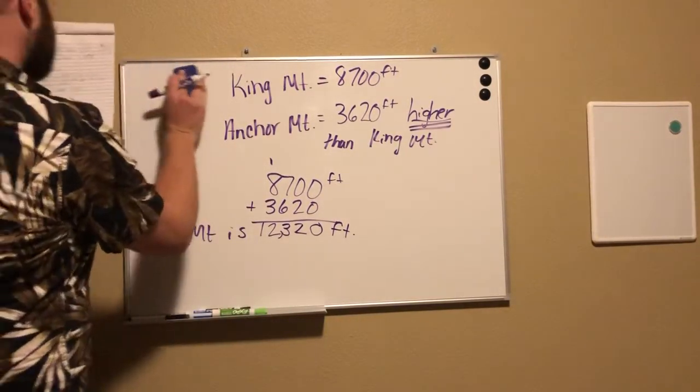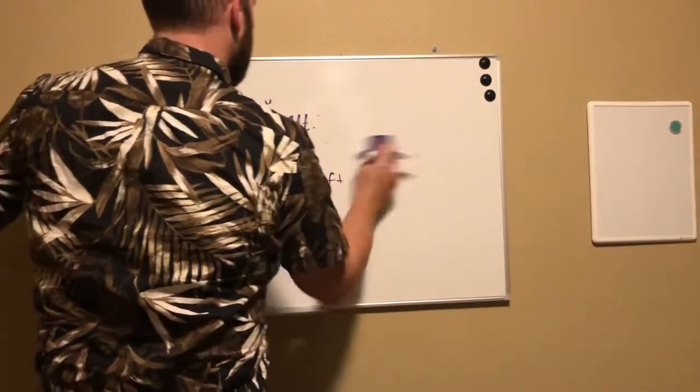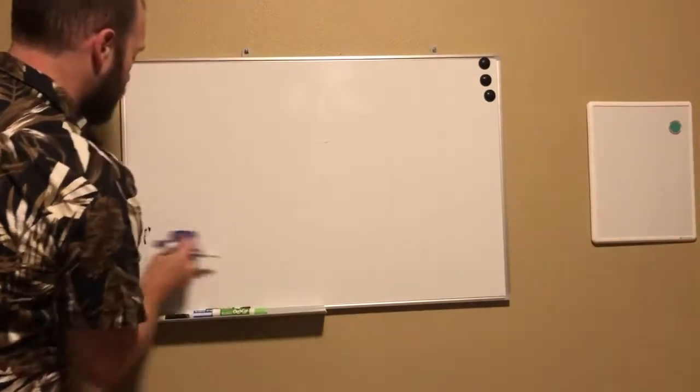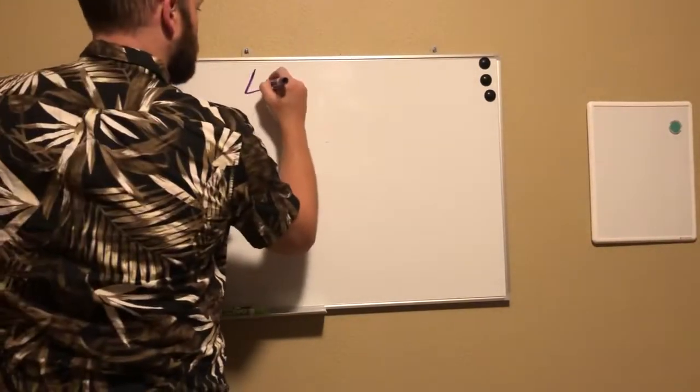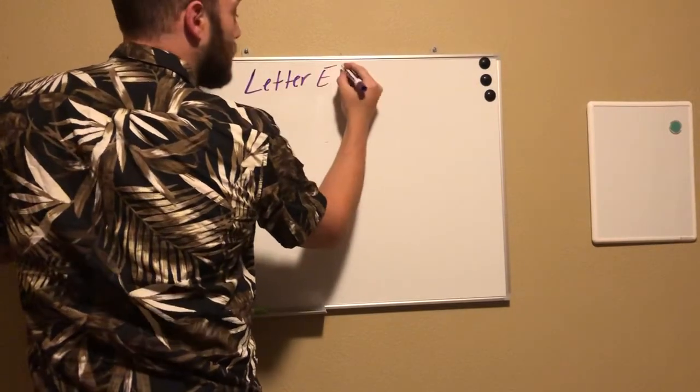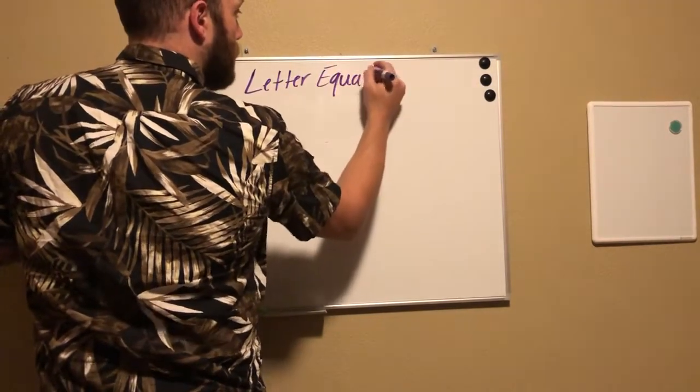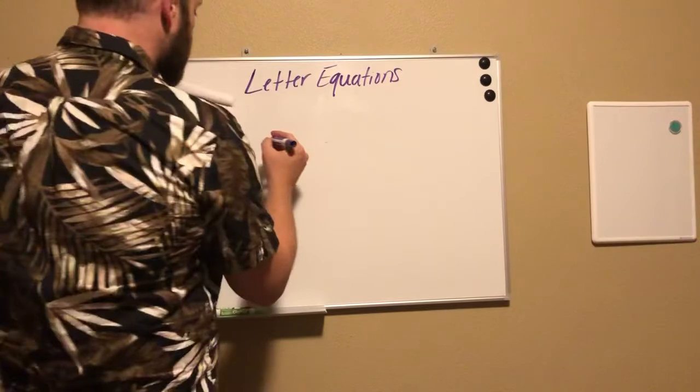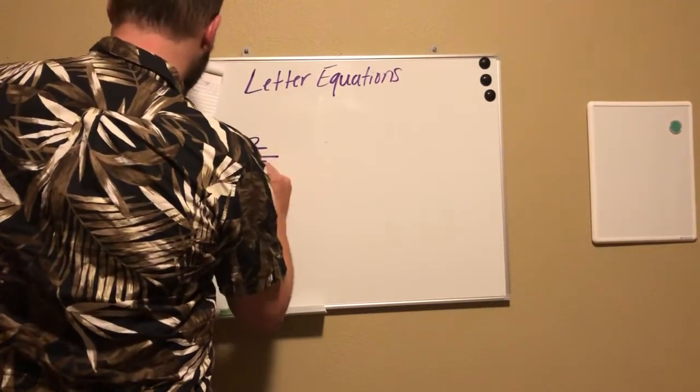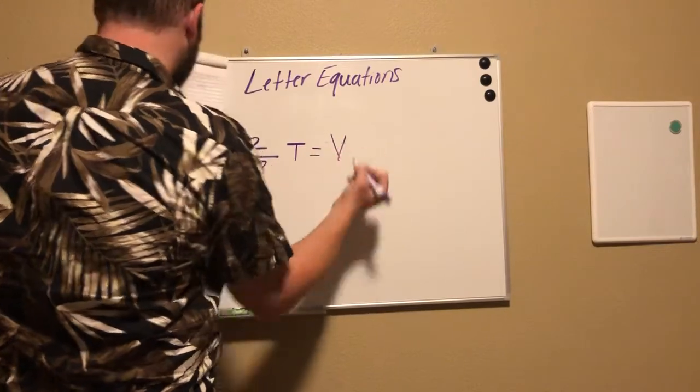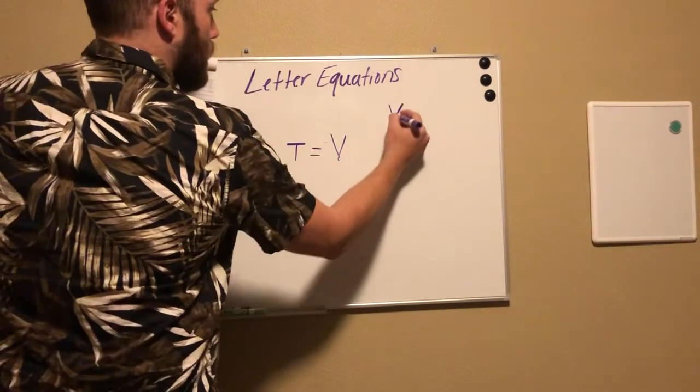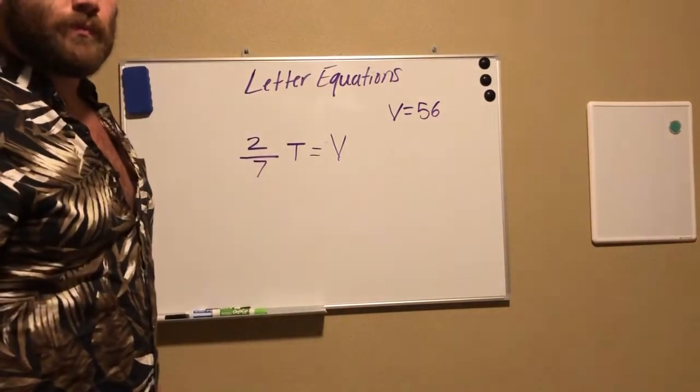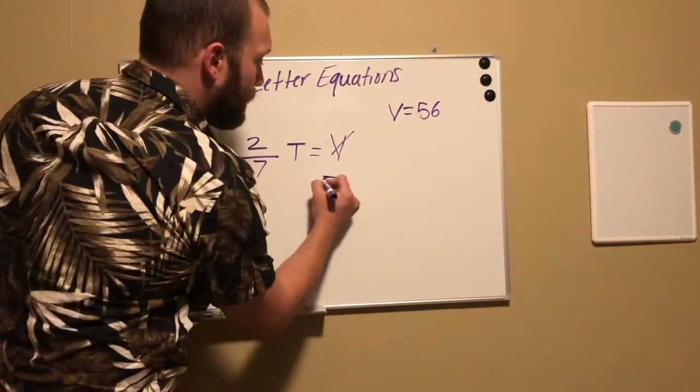All right, the last thing on your worksheet is letter equations. I like these because I like to balance out equations, and this is the perfect example of how we do that. So the first one on your worksheet says two-sevenths T equals V. V equals 56. What should I do with this V? That's right, I should cross it out and plug in 56.